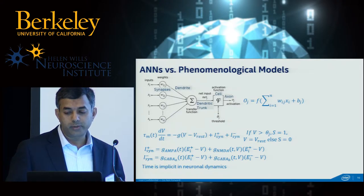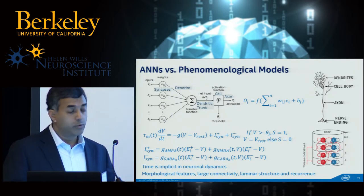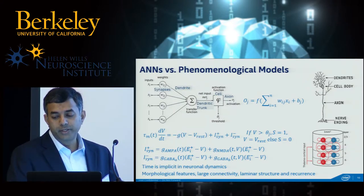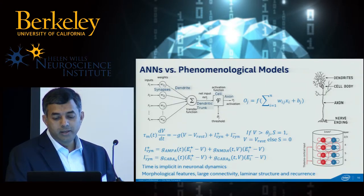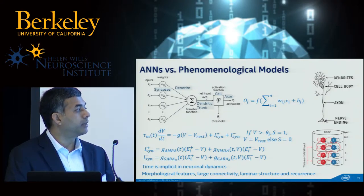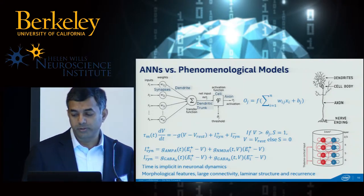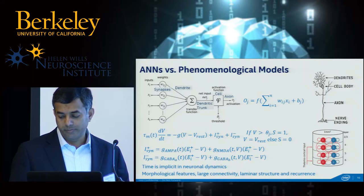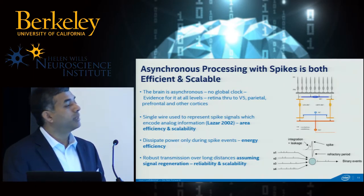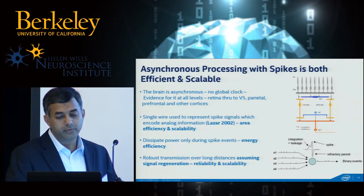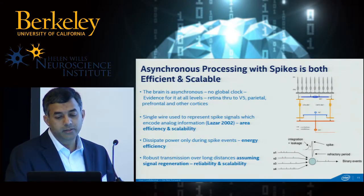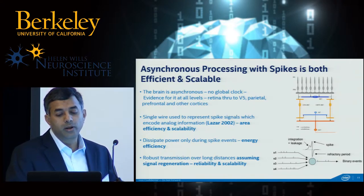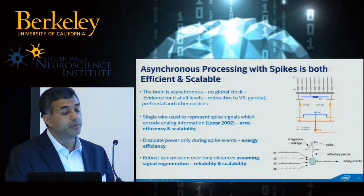We heard from Christophe and others about features prevalent in the nervous system: morphological features, large connectivity of 1,000–10,000 connections, laminar structures, layered architectures that repeat with recurrent networks, and excitatory and inhibitory neurons in arbitrary configurations realizing very complex dynamics. Some features interesting to Intel include asynchronous processing with spikes that is both efficient and scalable. There's lots of evidence for the brain being asynchronous — there's no particular global clock, with evidence at all levels from retina through V5, parietal, and prefrontal cortices.